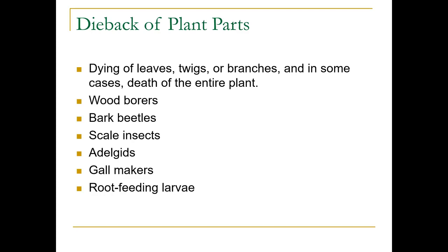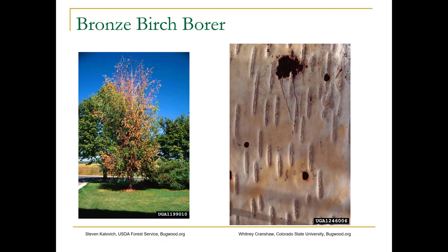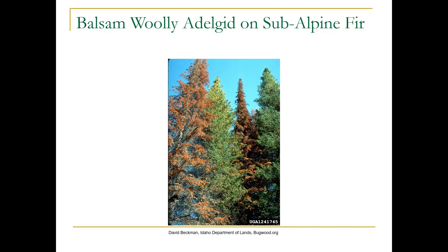You're going to see dieback of plant parts — twigs or branches — and sometimes the death of the entire plant. This could be from wood borers, bark beetles, scale insects, adelgids, gall makers, or root-feeding larvae. This is bronze birch borer — you're going to see whole sections of the tree have died back. On Himalayan white pine or white birch, you see a lot of this where the lower foliage looks okay but the top has died. If you look on the trunk, you would see D-shaped holes, which is an indicator of bronze birch borer. Balsam woolly adelgid on subalpine fir is another problem — that tree really should not be grown in the Seattle area, it should be up at elevation.